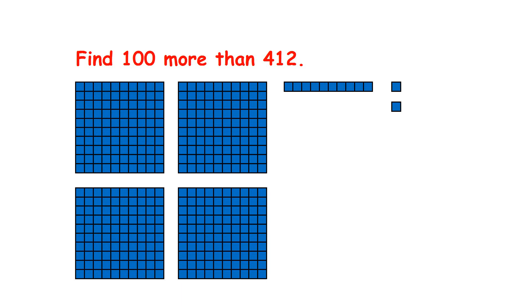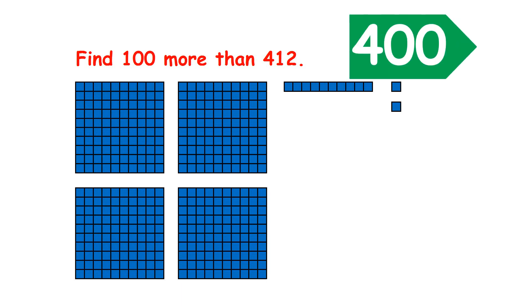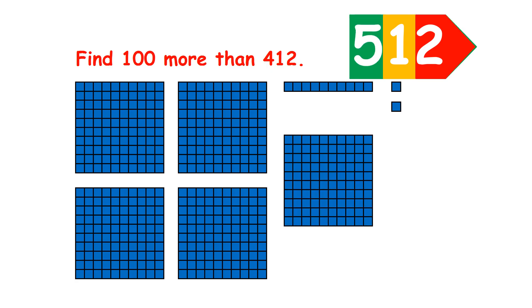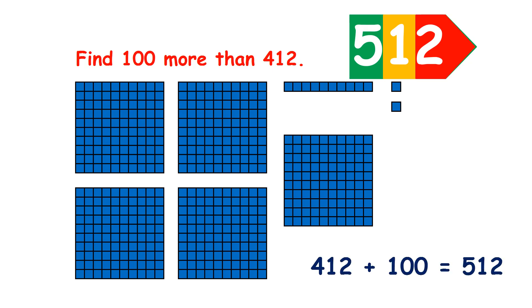So here we have four hundredths, one ten, and two units, so four hundred and twelve. If we add a hundred, we now have five hundredths, and of course we still have one ten and two units, so four hundred and twelve plus one hundred equals five hundred and twelve.